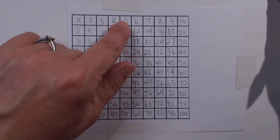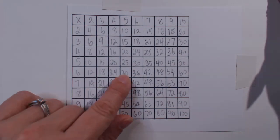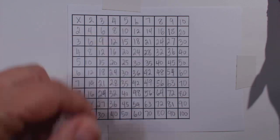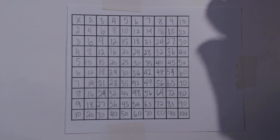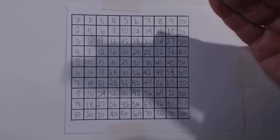For division, seven divided into thirty-five is five. We can use it for that as well. This can help us with all those advanced skills that we need to learn as we're going up in the grades.